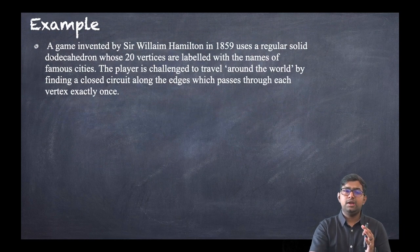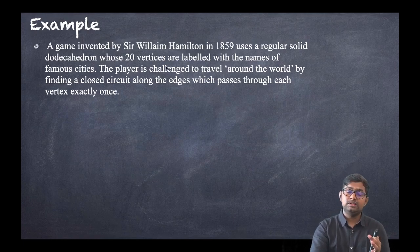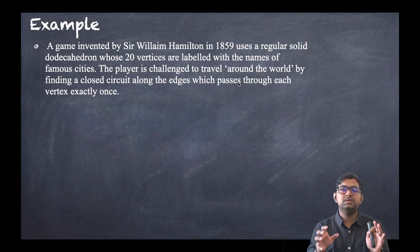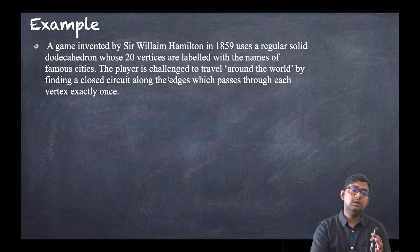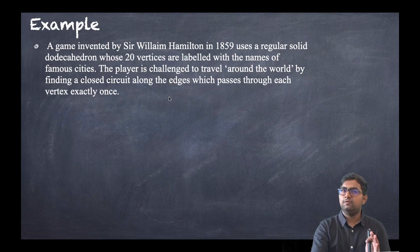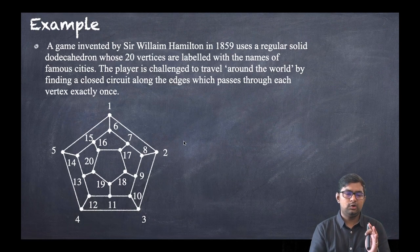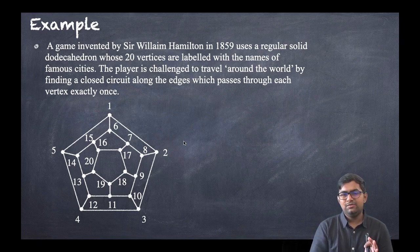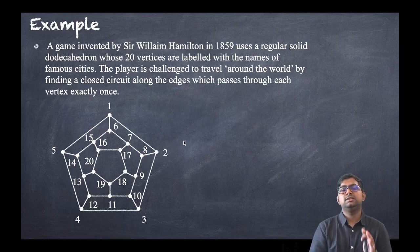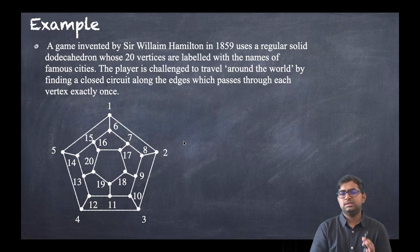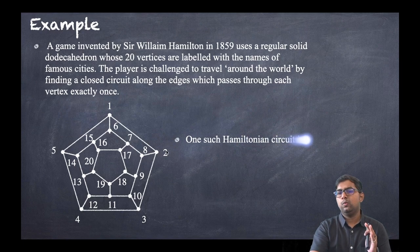A game invented by Sir William Hamilton in 1859 uses a regular solid dodecahedron whose 20 vertices are labeled with the names of famous cities. The player is challenged to travel around the world by finding a closed circuit along the edges that passes through each city exactly once. A traveler must visit all 20 cities exactly once and return to the first city — this is the Hamiltonian circuit problem.